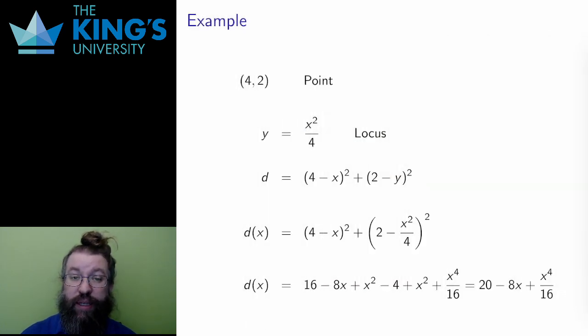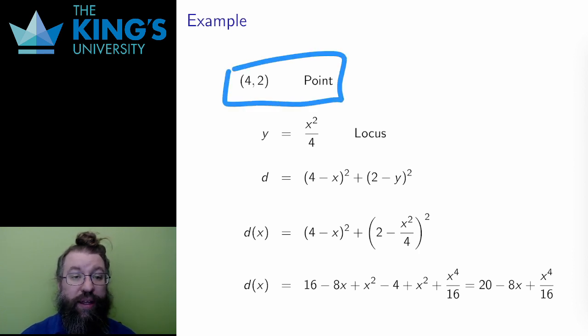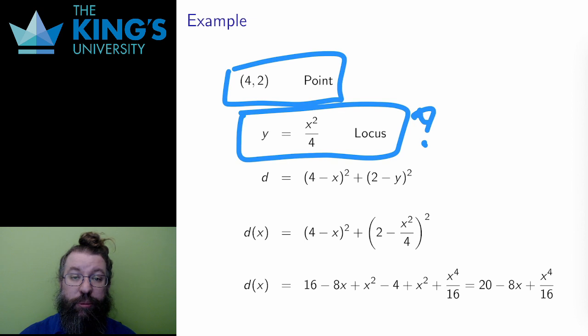Here's an example. The fixed point is (4,2). And the locus is the parabola y equals x squared over 4. What point on the parabola is closest to (4,2)? Here, I can't ask for furthest away, since the parabola keeps going off to infinity, so the distance is unlimited.